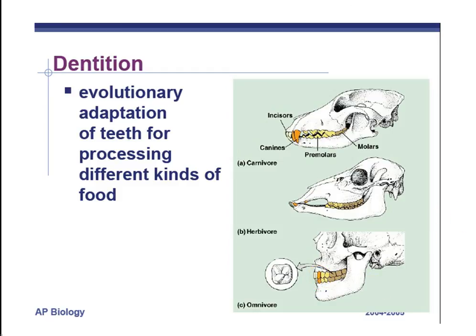By the way, when we look at dinosaur fossils, that's what we look for — the teeth. If they have all grinding teeth, they were probably some kind of herbivore, like Triceratops. If they have a bunch of sharp teeth, like the T-Rex, they were probably a carnivore. So just by looking at the teeth, you can tell something about the diet of the animal.